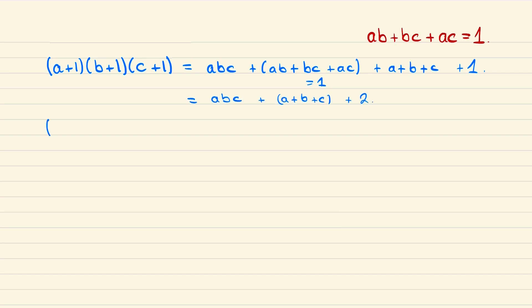If we next consider (a-1)(b-1)(c-1), then this is abc minus (ab plus bc plus ac) plus a plus b plus c minus 1. By a similar method as before we can show that this is abc plus a plus b plus c minus 2, and so what we've shown is that we can write the left hand side as (a+1)(b+1)(c+1) minus 4.